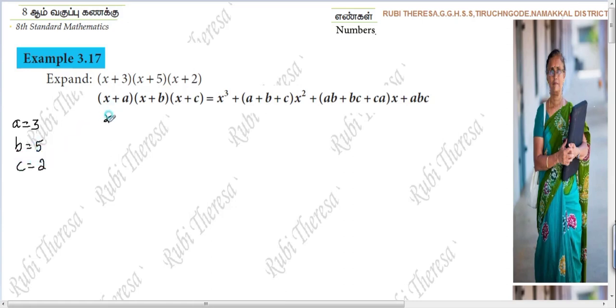x plus 3, so in the place of A you have 3. x plus 5, in the place of B you have 5. x plus 2, in the place of C you have 2.